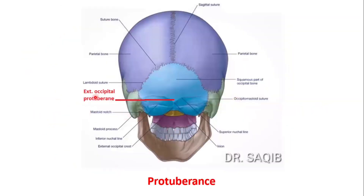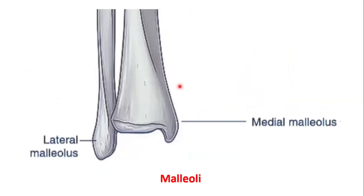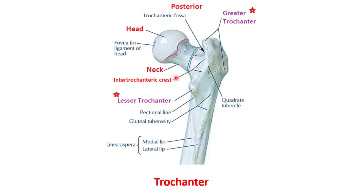Next is the protuberance — the external occipital protuberance. Here you could see the laser at the occipital bone; this is the external occipital protuberance. And this is the tibial tuberosity, with attachment of the ligamentum patellae. Now the malleoli: this is the fibula bone with the lateral malleolus on the lateral side, and the tibia bone with the medial malleolus on the medial side. These are the trochanters — the greater and lesser trochanter of the femur, seen at the upper end of the femur.